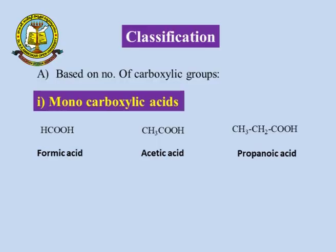Some examples of monocarboxylic acid: formic acid has the HC(=O)OH group, with only one carboxylic acid group. Acetic acid, CH₃COOH, also has only one carboxylic acid group. Propanoic acid has two alkyl groups and one carboxylic acid group. So all these are examples under monocarboxylic acid.